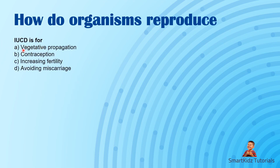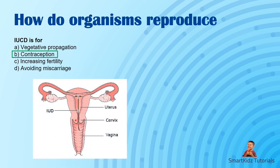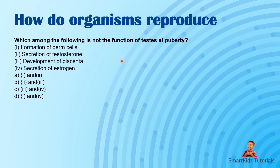IUCD — you should know what IUCD stands for. It's Intrauterine Contraceptive Device. Once you know the full form, you know it refers to contraception. For example, the IUD device — a T-shaped copper T — is inserted here, blocking the passage of eggs and also the passage of sperm from reaching the eggs, from both sides.